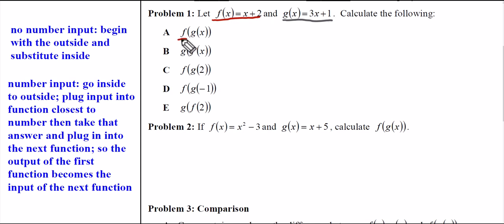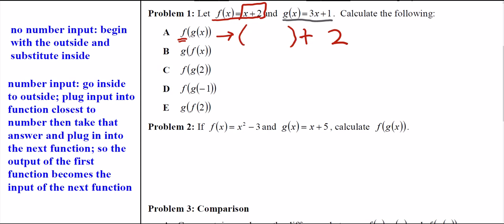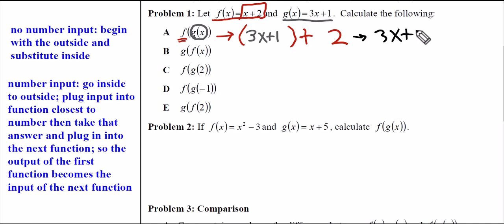F is on the outside, so I'll write out F(x), which is X plus 2. Now I'll prepare this function by making some space to put the other function inside of it. Wherever I see an X for F(x), I'll leave some space and insert G(x), which is 3x plus 1. This is what F of G of X looks like. If we simplify, we get 3x plus 1 plus 2, so F of G of X equals 3x plus 3.